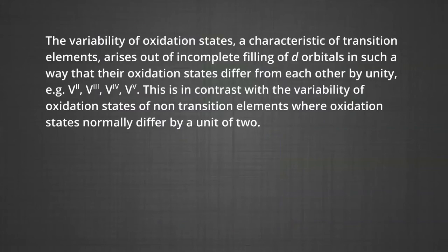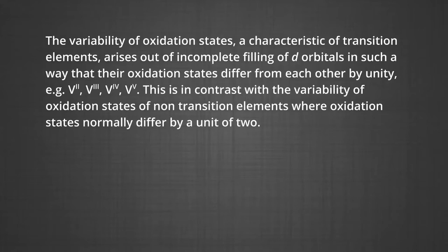The variability of oxidation states, a characteristic of transition elements, arises from incomplete filling of the D orbitals in such a way that their oxidation states differ from each other by unity — for example, vanadium from +2 to +3, +4, and +5. This contrasts with non-transition elements, where oxidation states normally differ by a unit of 2.